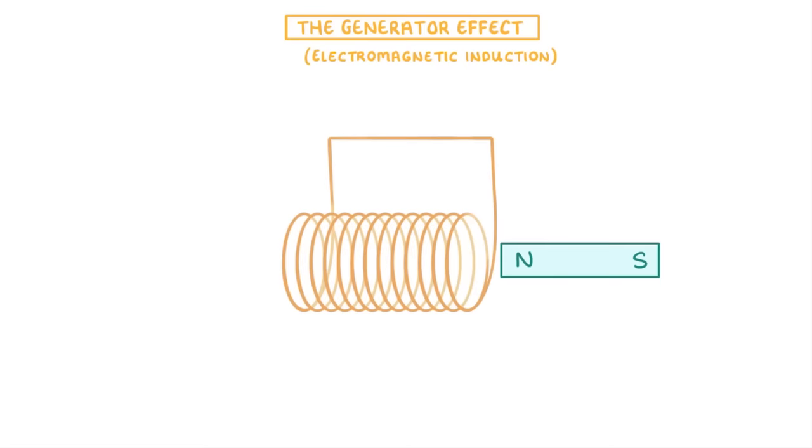The very last thing we need to cover is how this concept works when we're moving a single magnet into and out of a coil of wire. Just like before, this movement of the magnetic field relative to the coil induces a potential difference in the coil.